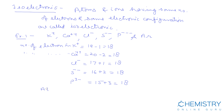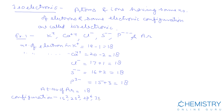The atomic number of argon is 18, so the number of electrons in argon is also 18. The electronic configuration for all these species is 1s² 2s² 2p⁶ 3s² 3p⁶, so these are isoelectronic — the number of electrons and electronic configuration are both the same.